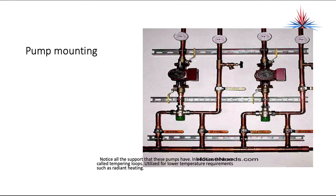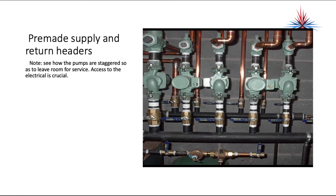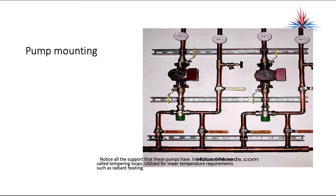Here's an example of pump mounting for inline or smaller circulators on pre-made supply and return headers. Notice how the pumps are staggered to leave room — one is slightly behind the other to allow access to the electrical connections. This is a manifold made using tees and short pieces of pipe. Anytime you have a good quantity of valves that you can turn on and off, the better the installation.